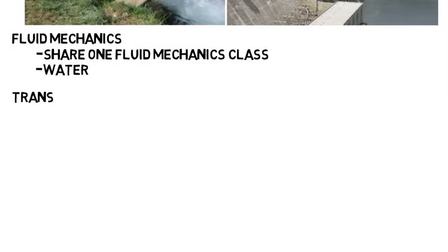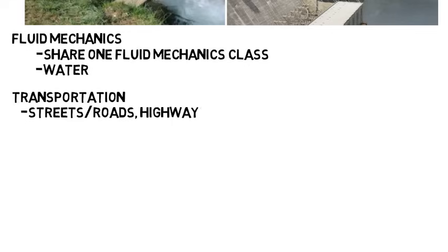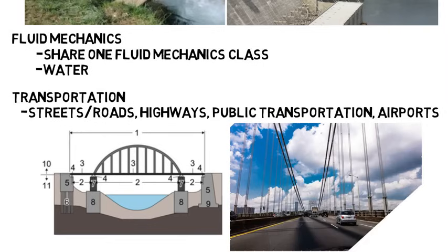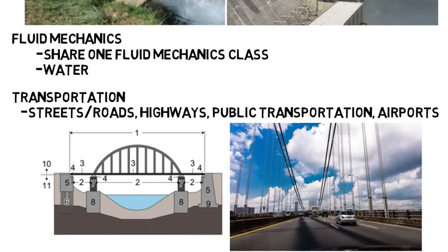And last is transportation, which is about designing streets and roads, highways, public transportation systems, and airports. Whereas a structural engineer would design the structure of a bridge and worry more about the physics of it, a transportation engineer would determine how many lanes are needed, the possible curvature of the road, and determining safety such as the speed limit that cars can safely travel at. It's more about ensuring the safe and efficient transportation of people and goods.